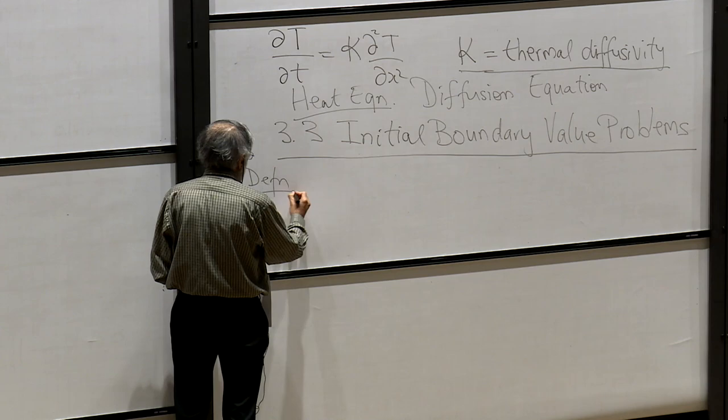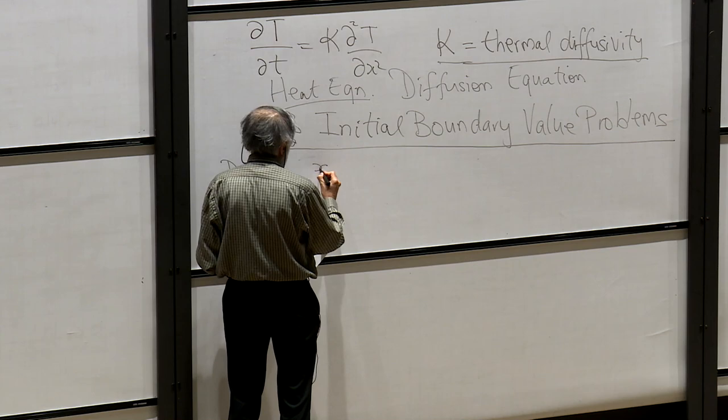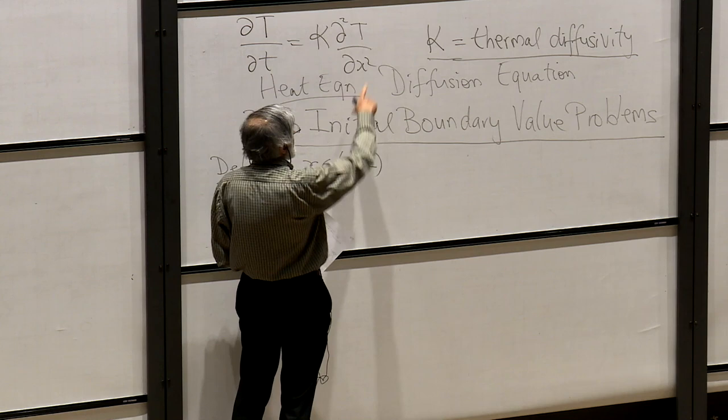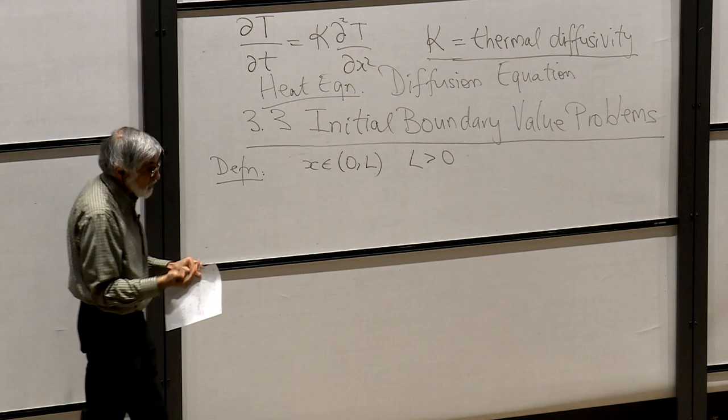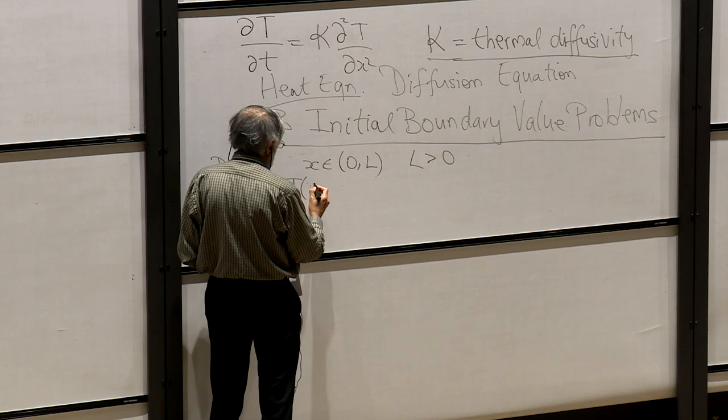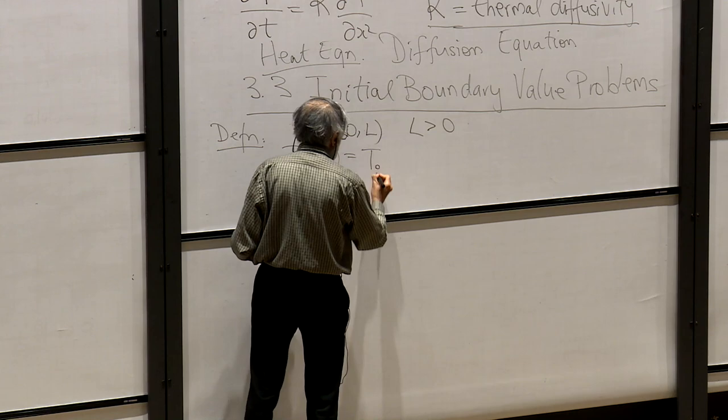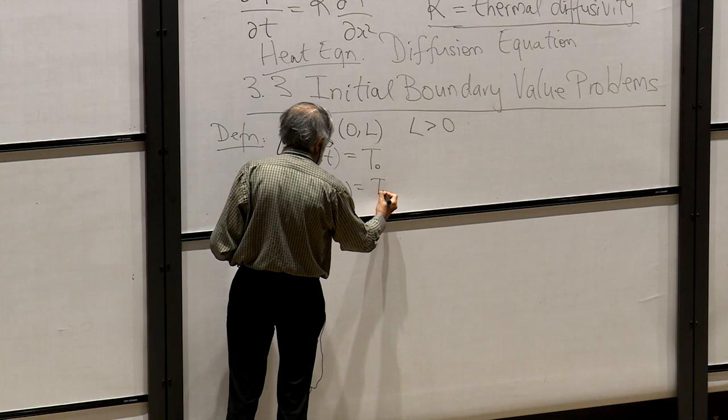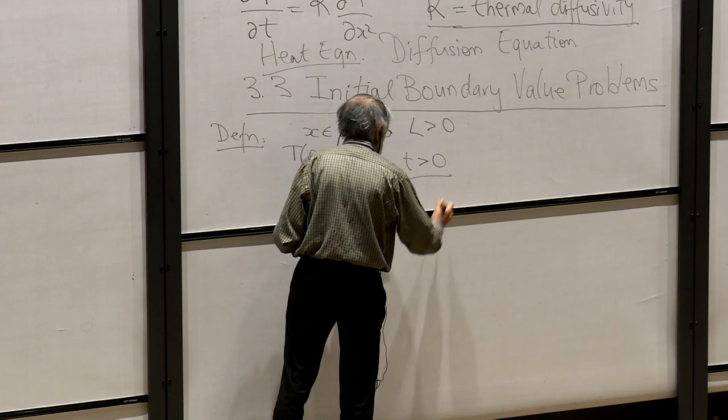So, definition: suppose we had x on the domain 0 to L, where L is some constant bigger than 0. Then we need to have some boundary conditions. So if we had T at 0, t equals T₀, and T at L, t equals T_L, for t greater than 0.